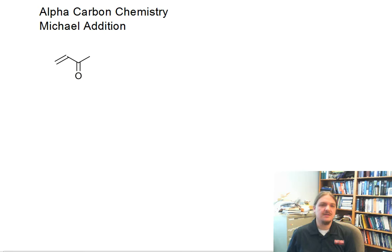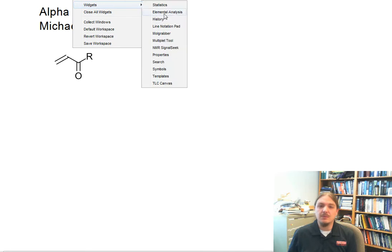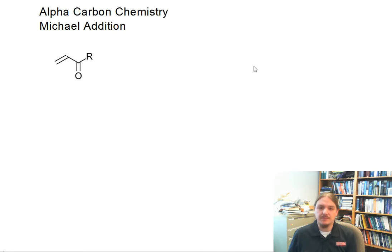The Michael Addition reaction is a reaction of alpha-beta unsaturated carbonyl compounds. So alpha-beta unsaturated carbonyl compounds have an alkene between the alpha carbon and the beta carbon.